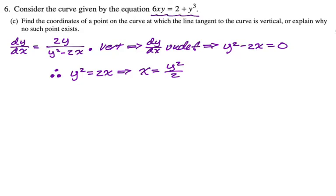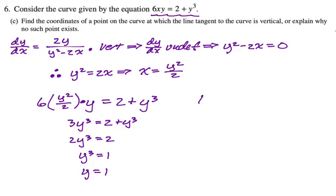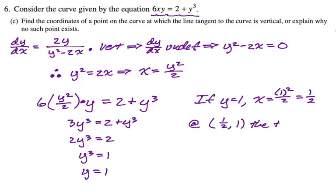We go back to our equation and replace x with y squared over 2. We get 6 times (y squared over 2) times y equals 2 plus y cubed, which simplifies to 3y cubed equals 2 plus y cubed. Subtracting y cubed from both sides gives 2y cubed equals 2, so y cubed equals 1, meaning y equals 1. Then x equals 1 squared over 2, which is 1/2. So the point is (1/2, 1).